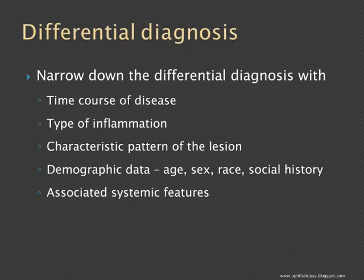For example, in posterior uveitis, it can present in a particular pattern seen only in one disease and not in another. For example, toxoplasmosis has a very characteristic pattern, so the characteristic pattern of the lesion will lead us to the diagnosis. Demographic data is also extremely important — taking history is very important in uveitis patients. Age, sex, race, and social history are definite modifying features in our differential diagnosis.